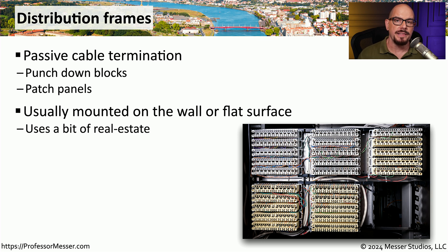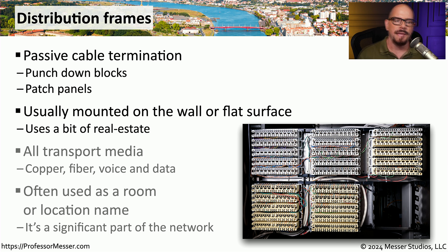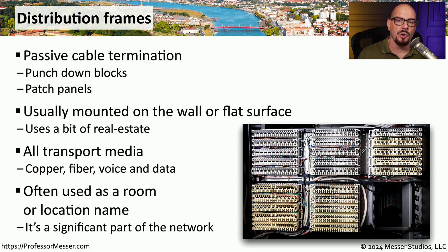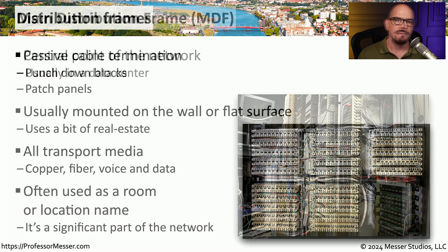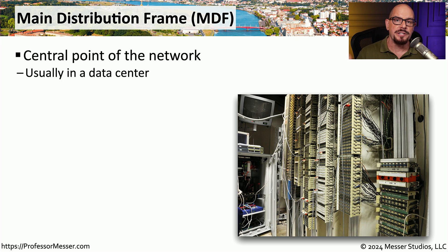You will usually find this distribution frame on the back wall of the data center, and it's often terminating cables that are coming in for your local area network and voice communication. Although the punch down blocks and patch panels on the wall are technically the distribution frame, we often refer to the entire room as the distribution frame room. For example, the primary distribution frame is called the main distribution frame or MDF, and we often refer to the entire room where it's located as the MDF facility.